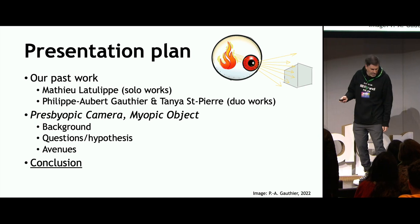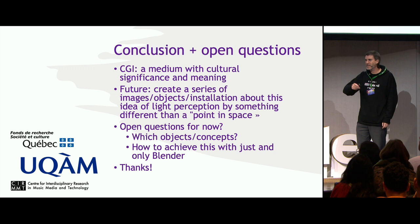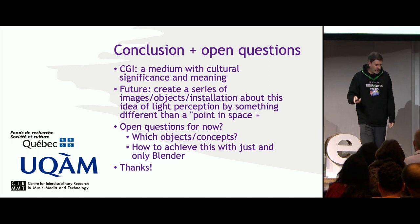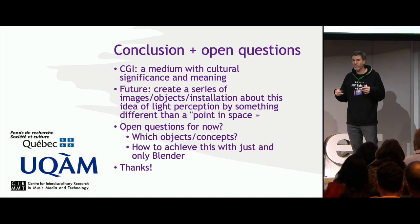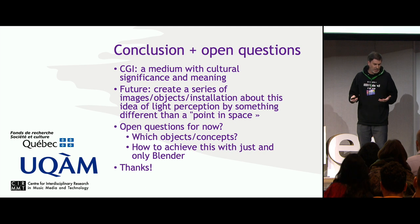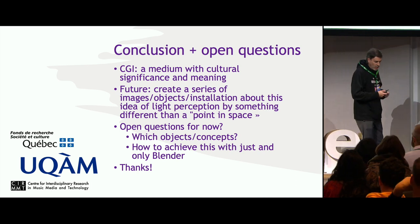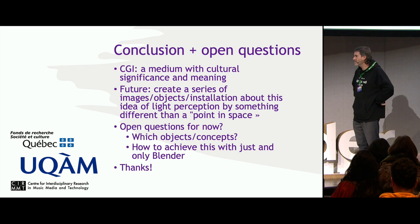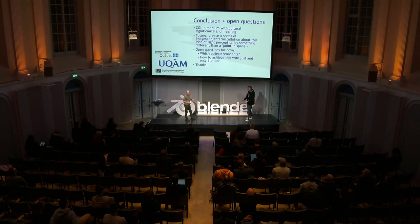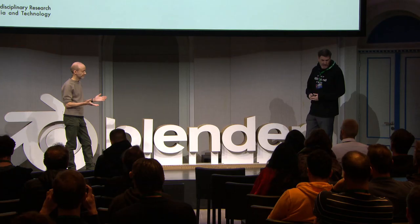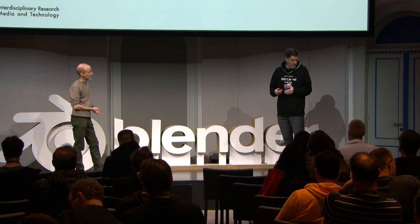Super quick conclusion: I hope that everybody leaves today with this thing in mind — CGI is a medium with cultural significance and meaning. It's not neutral. The future for the project is really just to create a bunch of images, objects, and probably even installations. We are super open about this idea of light perception by something different than a point in space — something different from our eyes. It's an open question for now. We don't know exactly what we'll be modeling, but one thing we know is that it will be done only and only with Blender.